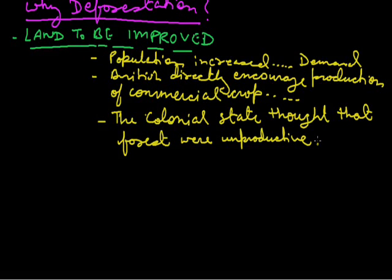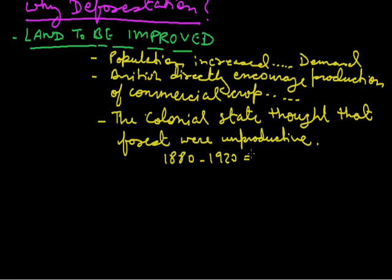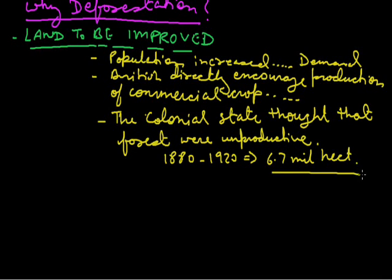Because of this, we see the data that between 1882 and 1920 — during these 40 years — 6.7 million hectares of forest were cut down.